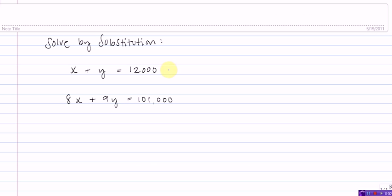So first, I'm going to solve this first equation for Y by subtracting X from both sides, which gives me 12,000 minus X. And this is the expression that I will substitute in for Y in the second equation, which looks like this.